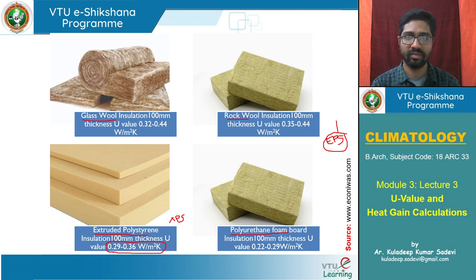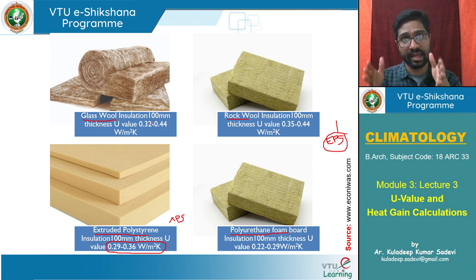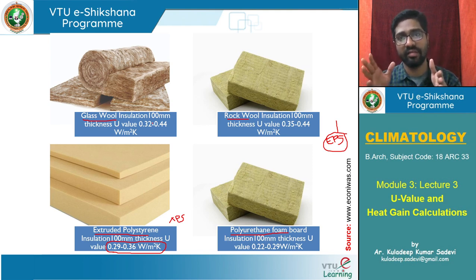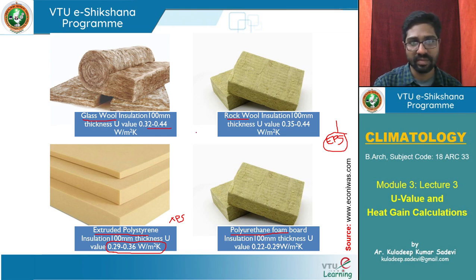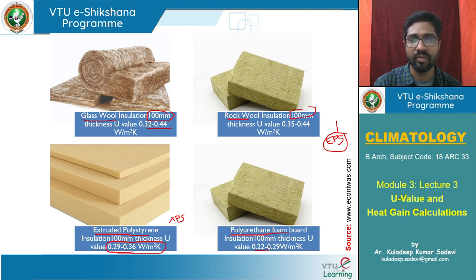These are four different insulating materials. Comparing U-values: a 300 mm thick AAC wall has roughly 0.5 W/m²·K, but all four insulating materials — at only 100 mm thickness — have much lesser values: 0.29, 0.32, 0.35, and 0.22 W/m²·K respectively.